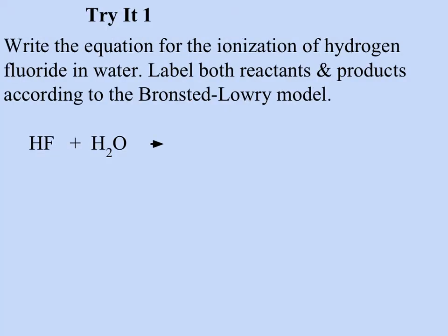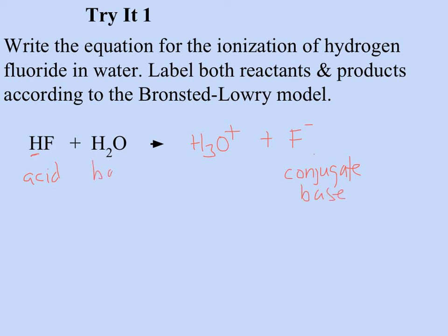For the ionization of hydrogen fluoride in water: hydrogen is donated by HF, water accepts it to form H3O+, and F- is left alone. HF is the acid because it gives up its hydrogen ion and becomes the conjugate base. Water starts as the base because it gains the H+, and H3O+ is therefore the conjugate acid. Those are the correct labels for hydrogen fluoride in water.